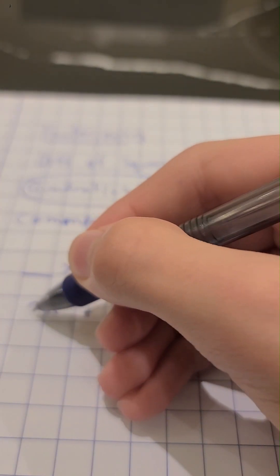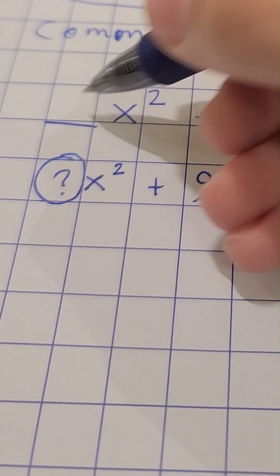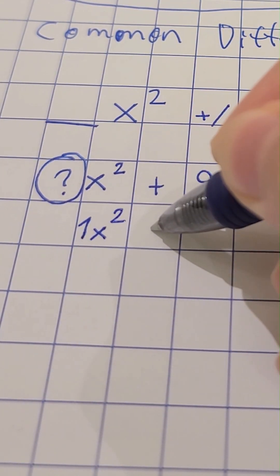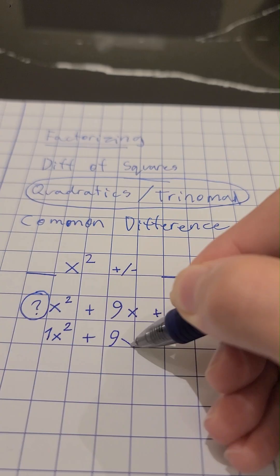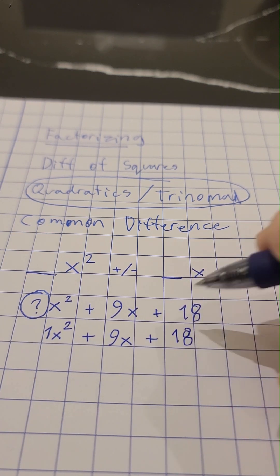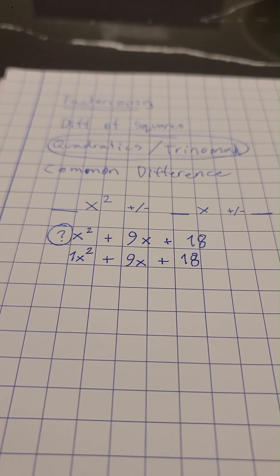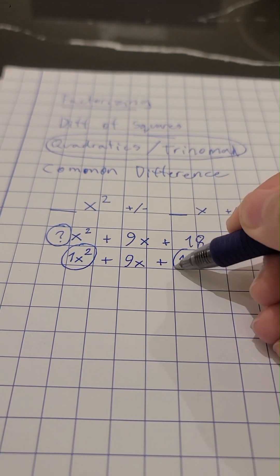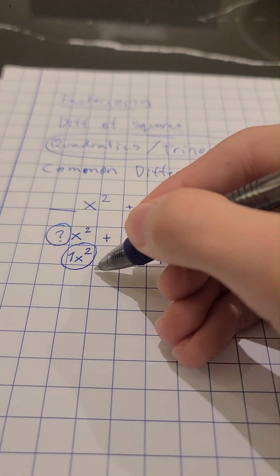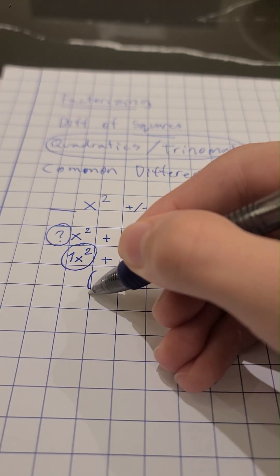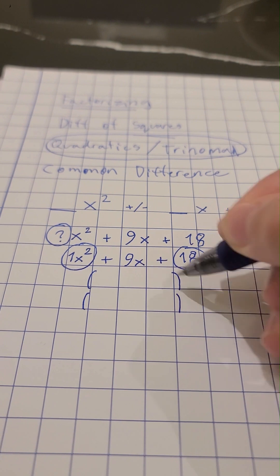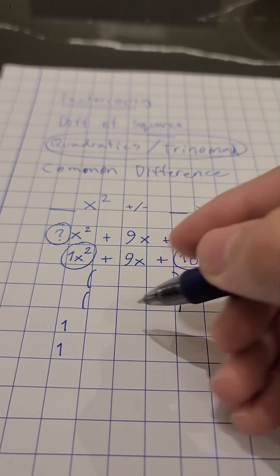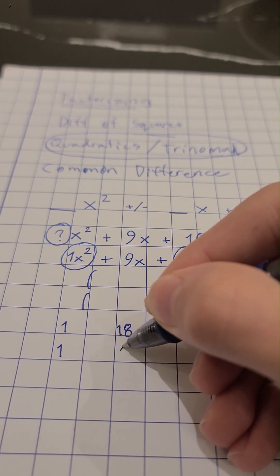There is no number before the x squared. What could we do in this situation? If there is no number, then we can just turn that into a 1x squared, and then continue on with the rest of the equation like normal. So we take the 1x and the 18, and then we collect multiples after opening two brackets.